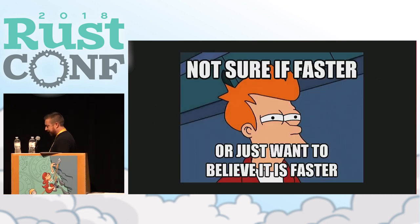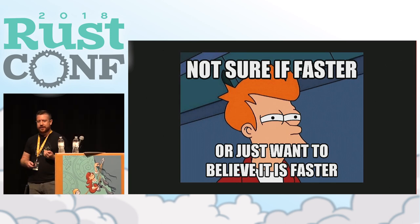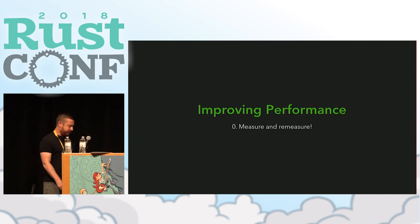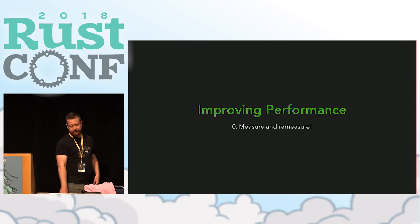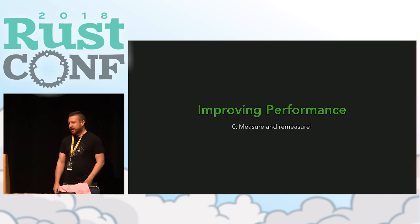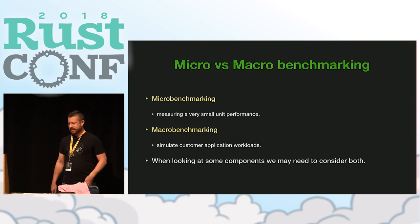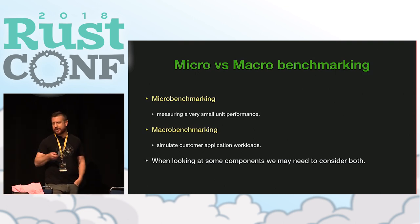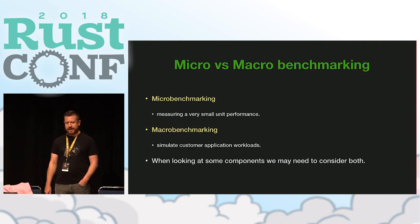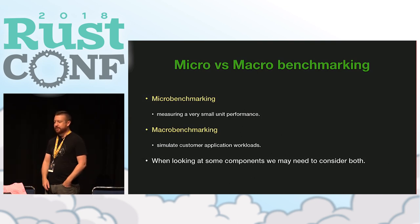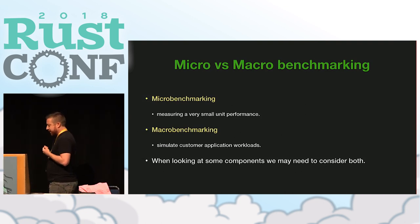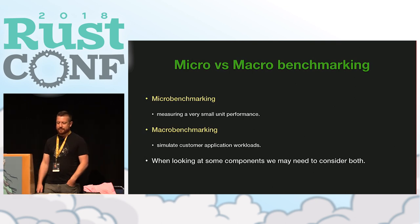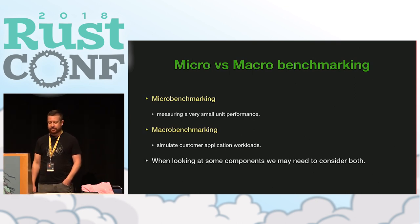To really understand the performance of a system, the first thing we need to do is be able to measure it. The idea is so that you can understand whether you're making positive or negative impacts to your library. There are a couple of terminologies you've probably heard: micro and macro benchmarking. Micro benchmarking is where you're measuring a very small unit of performance, and macro benchmarking is where you're trying to simulate customer application workloads.